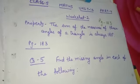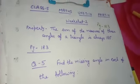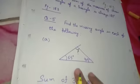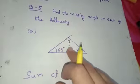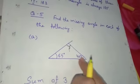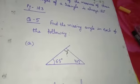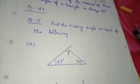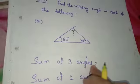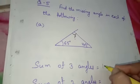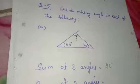Question number 5: find the missing angle in each of the following. A triangle is drawn with two angles given — 65 degrees and 40 degrees — and we need to find the third angle. Firstly, as we know, the sum of three angles of a triangle is always 180 degrees, so without any calculation we can write 180 degrees.